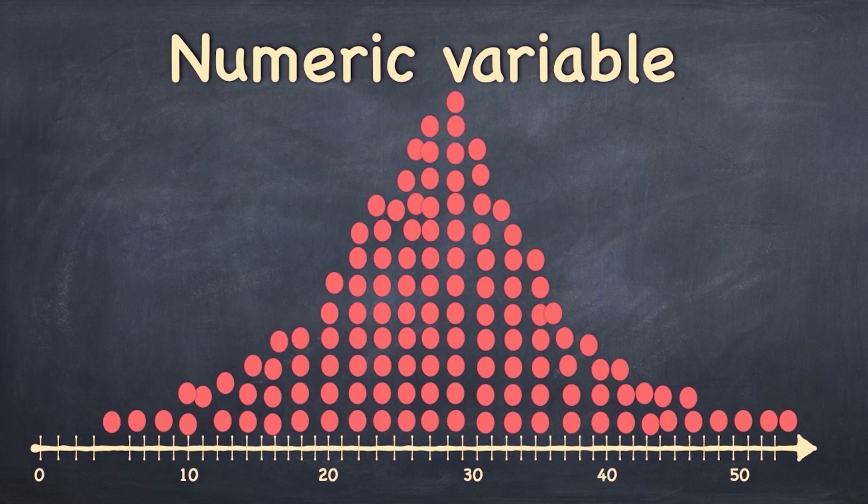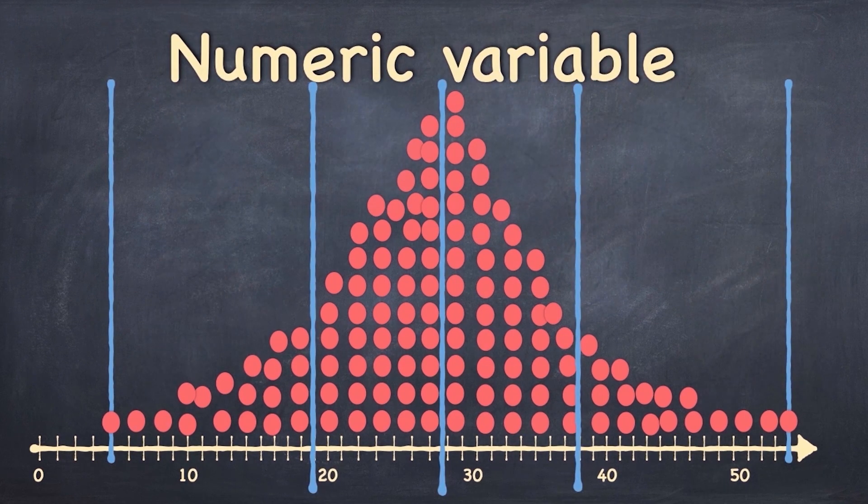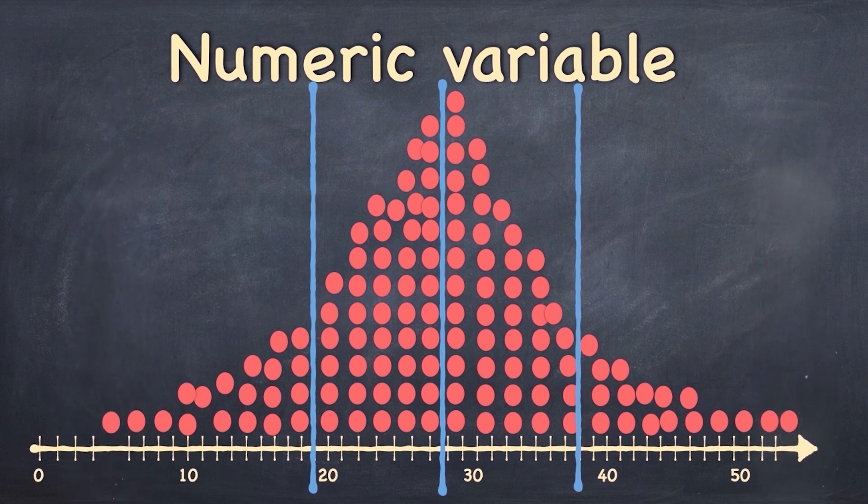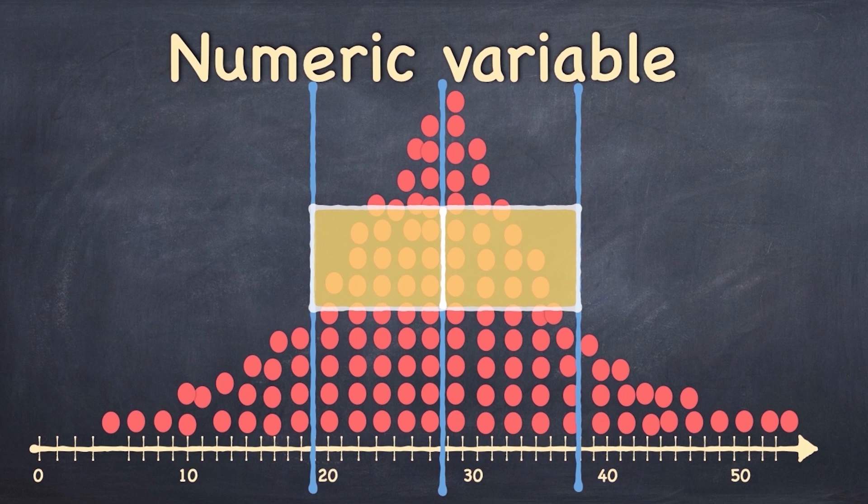Next, let's talk about box plots. Remember when we were describing our data, we divided our data into four quarters, and the middle two quarters were described as the interquartile range. Well, we can draw a box that represents the interquartile range with a line in the middle representing the median.